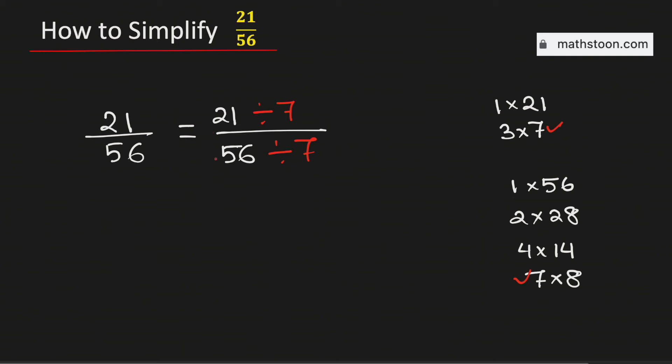And if we do it we will get 3 over 8. Therefore the fraction 21 over 56 simplified is equal to 3 over 8, and it is its lowest terms. And this is our final answer.